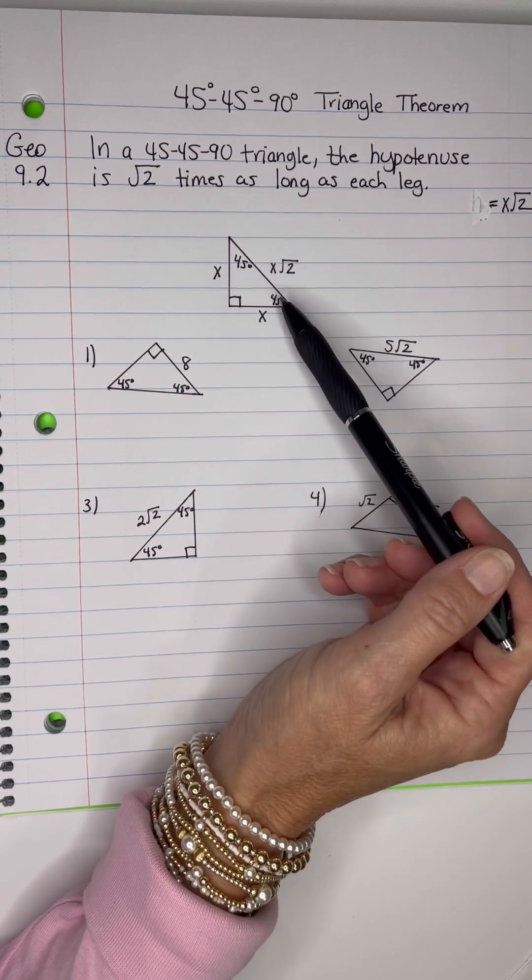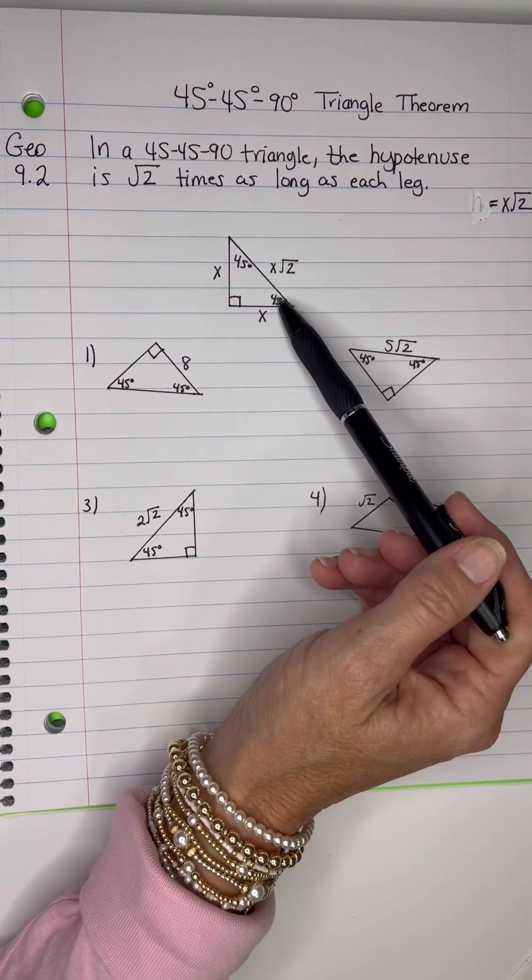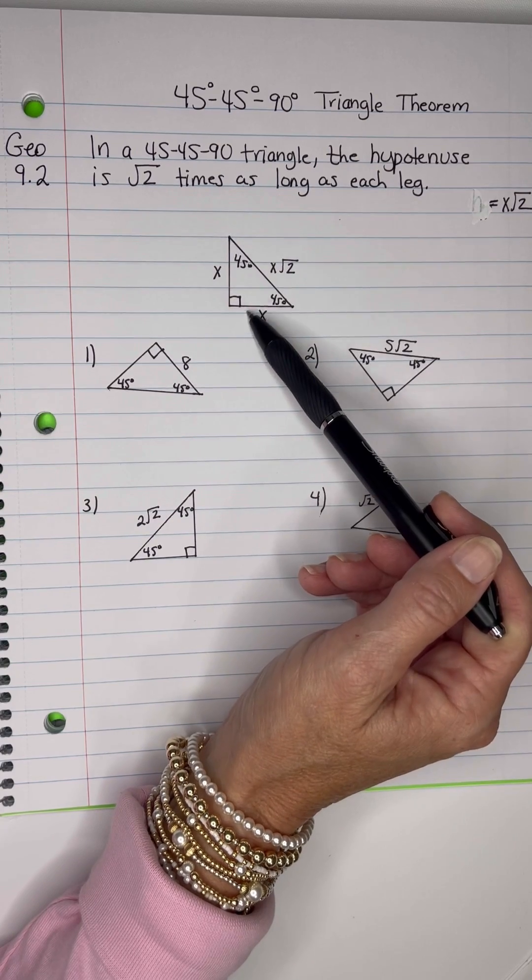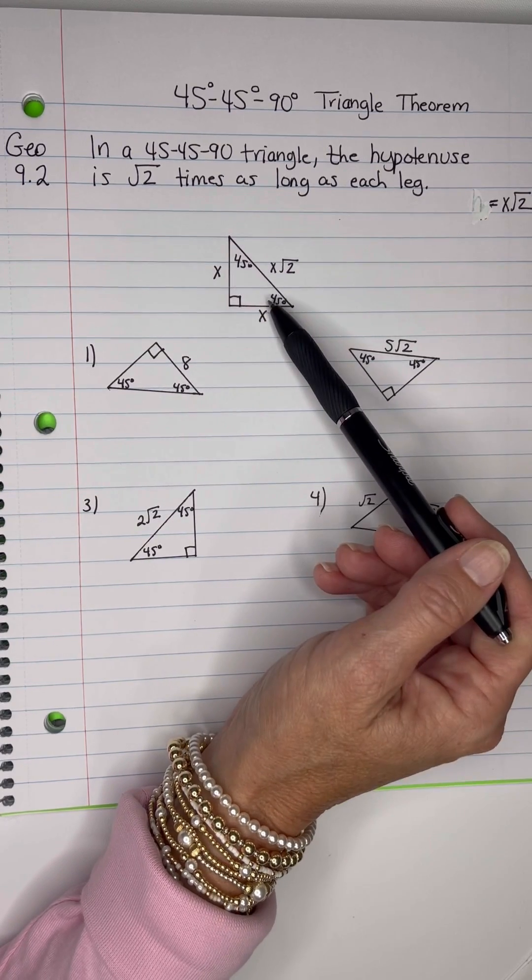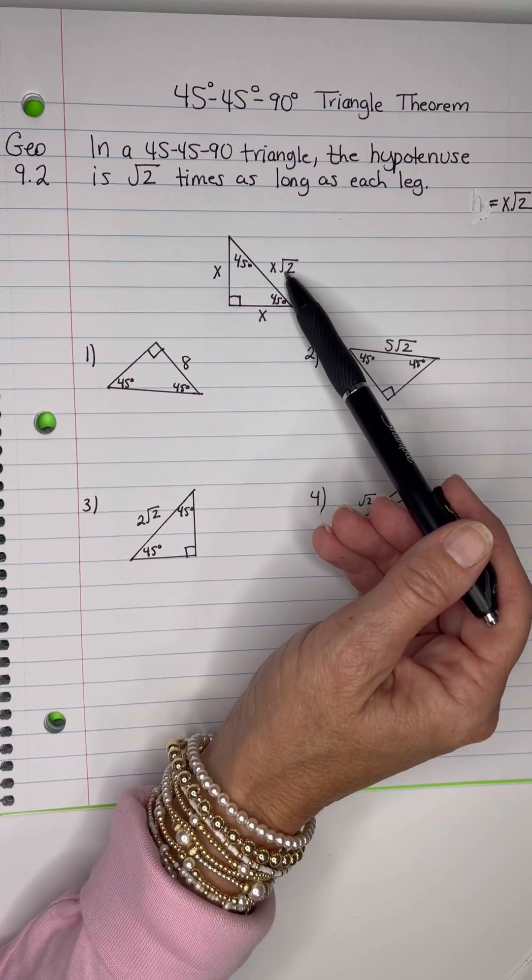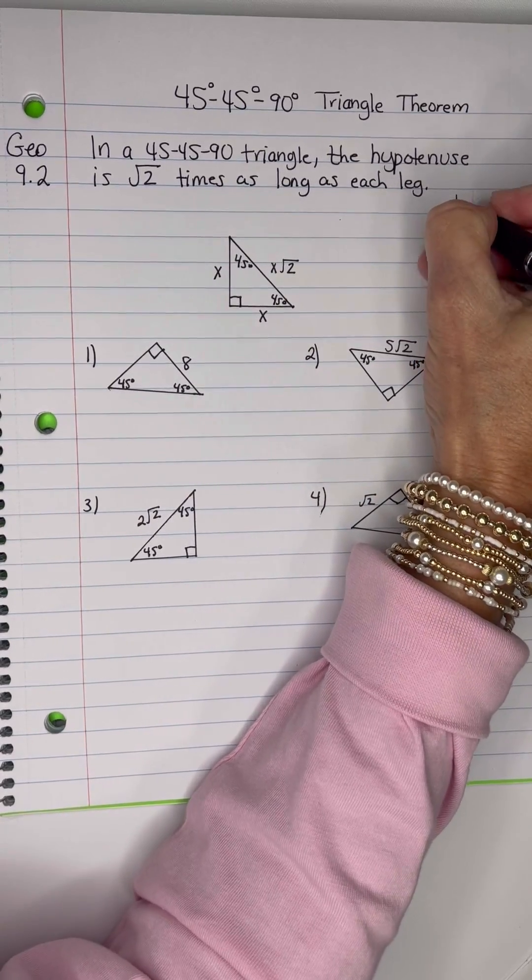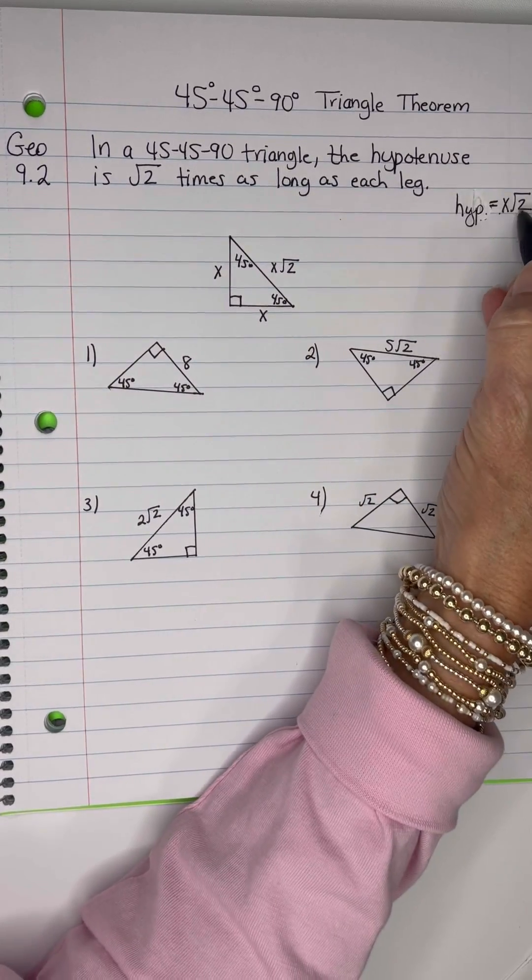When the angles are 45 degrees and this is 90, then these legs will be the same size. And then your hypotenuse will always be whatever the leg is times root 2. So your hypotenuse is always the leg times root 2.